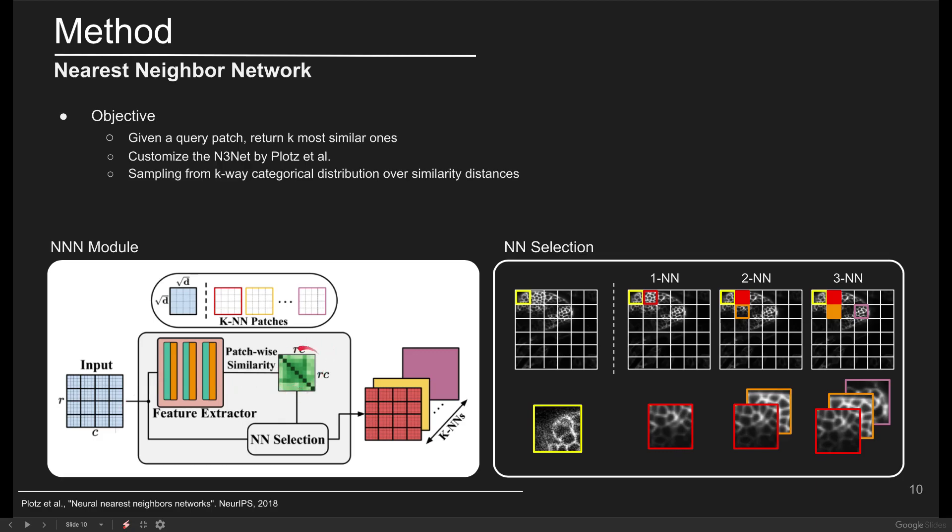Then the similarity distances between all pairs of patches are calculated and based on these distances, the NN selection module returns the indices of the most similar patches and stacks them across the channel dimension. In NN selection, the indices of the nearest neighbors are inferred by sampling from a K-way categorical distribution.